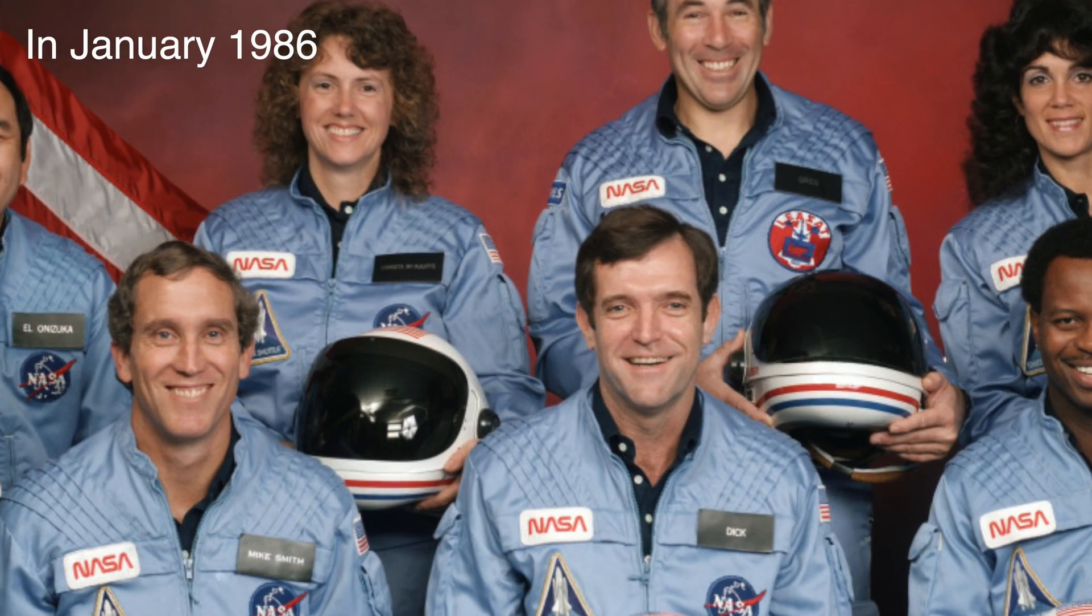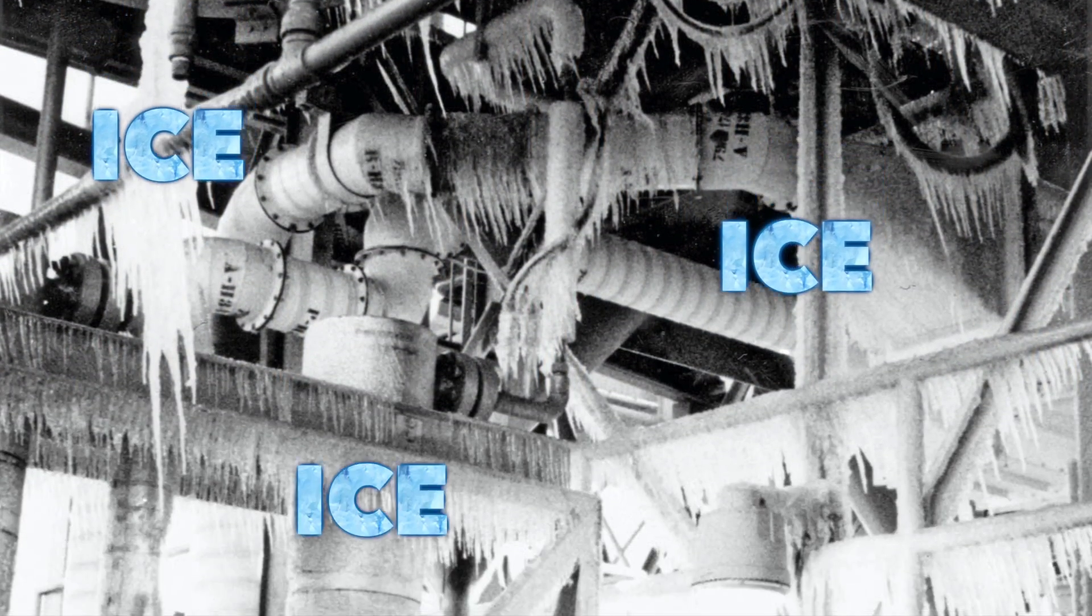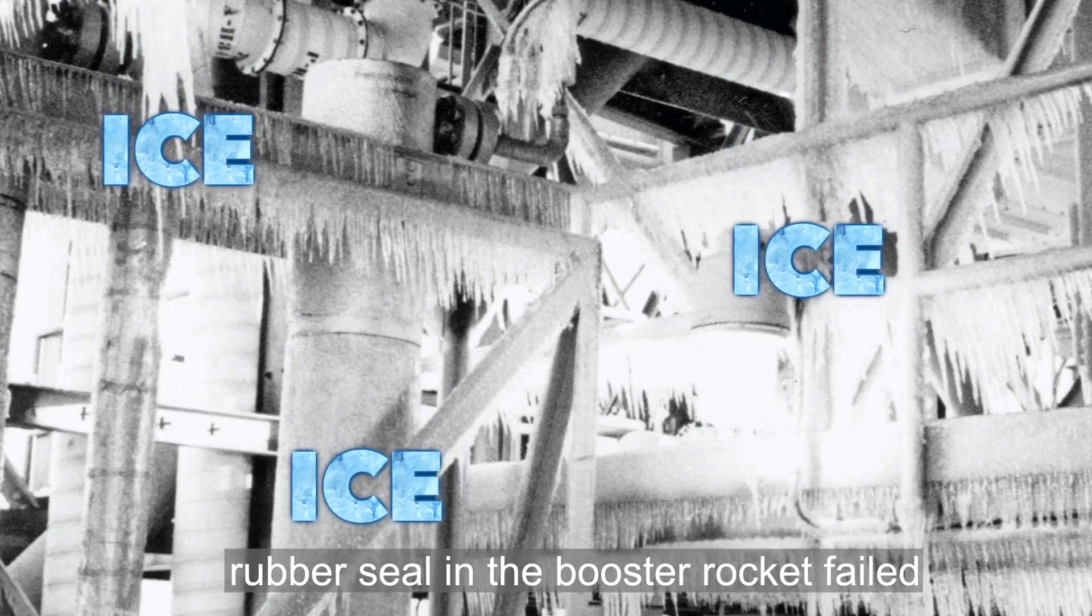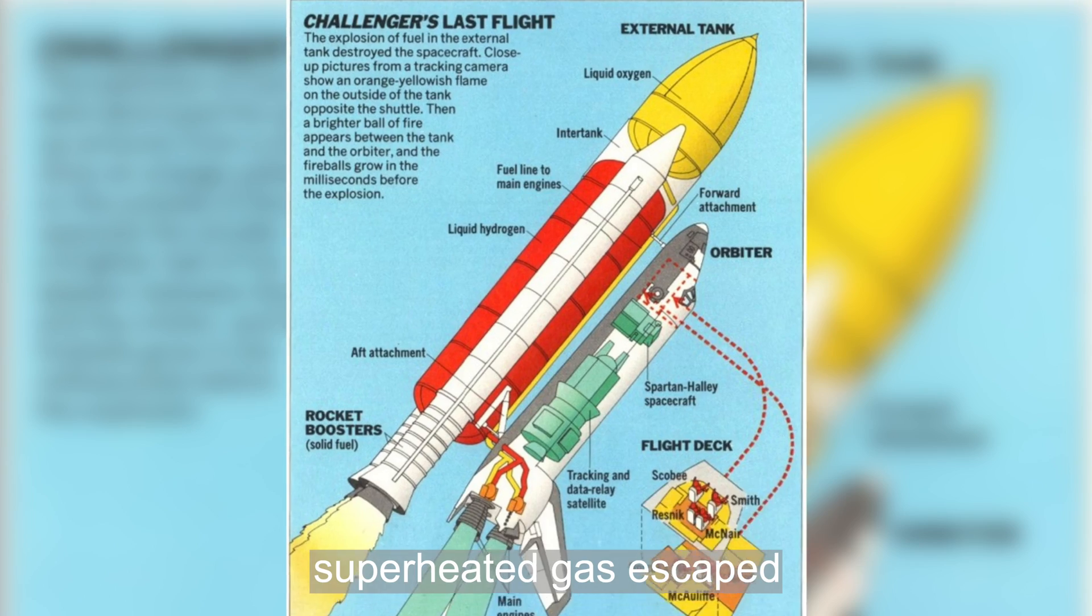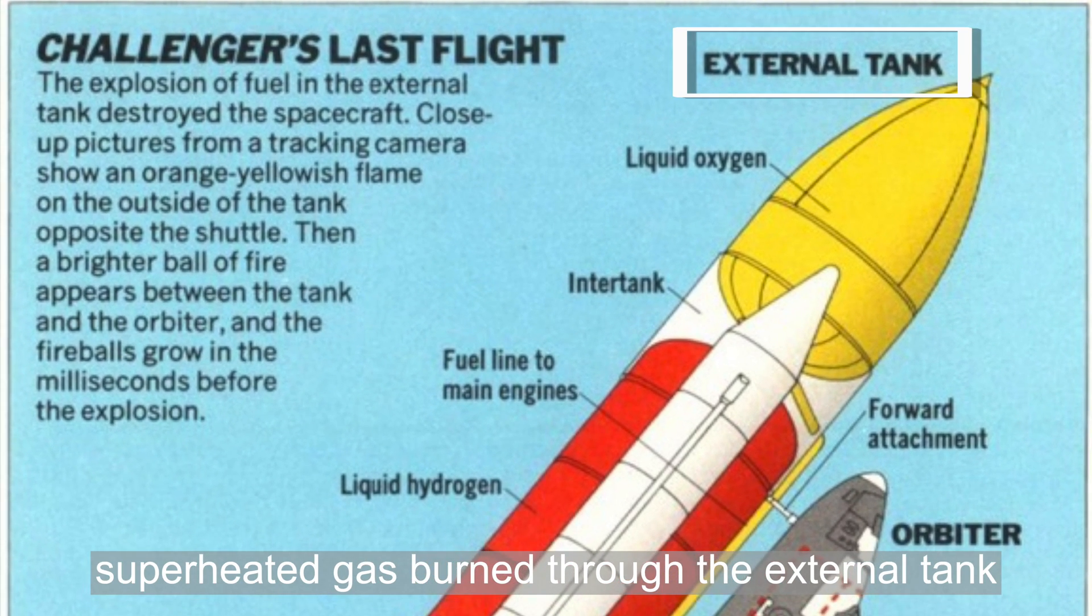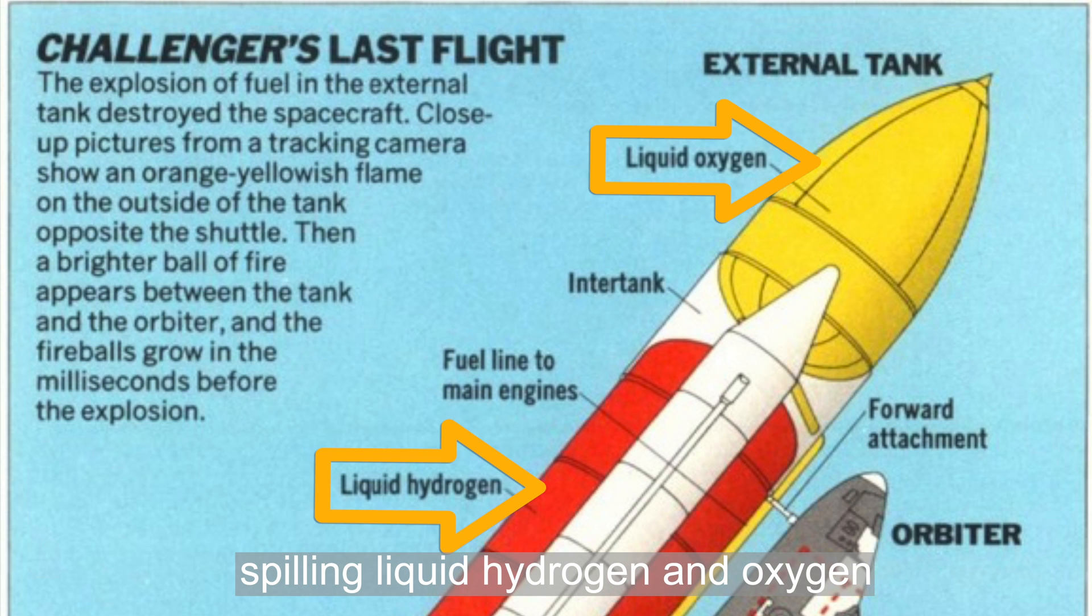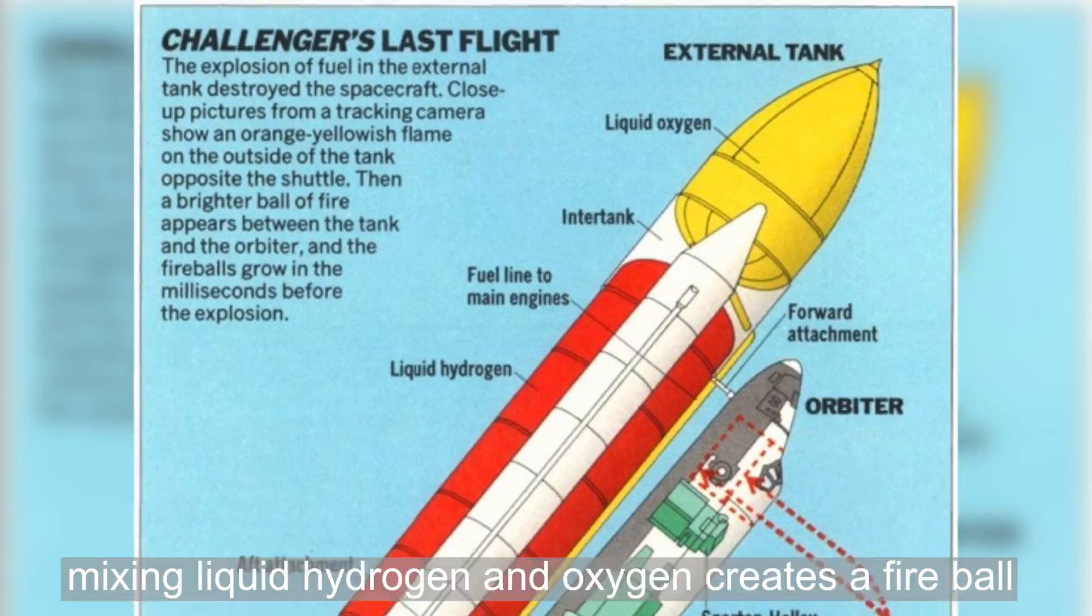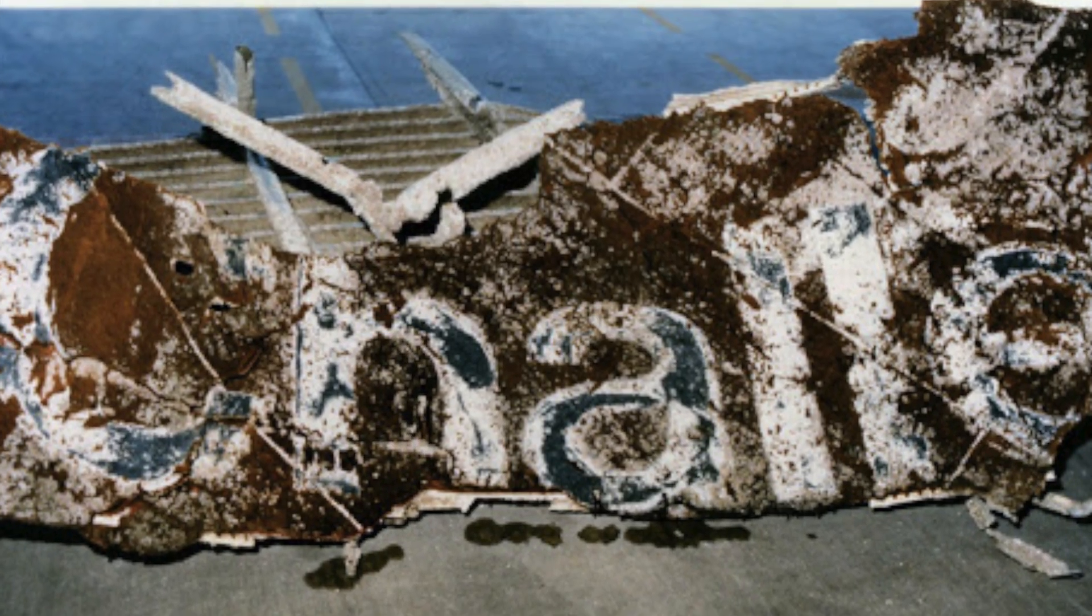Well, what caused this disaster? One investigation concluded that due to an unusually cold weather that morning, a rubber seal in the shuttle's booster rockets became stiff. This allowed superheated gas to escape and burn through the external tank. The external tank collapsed, spilling liquid hydrogen and oxygen inside. As you can imagine, mixing liquid hydrogen and oxygen created the huge fireball. This was a combustion reaction horribly gone wrong.